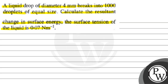So, the question is saying there is one big drop, whose diameter was 4 mm. It breaks into 1000 small droplets. We have to find how much resultant change occurs in surface energy at that time. The surface tension given is 0.07 N per meter.